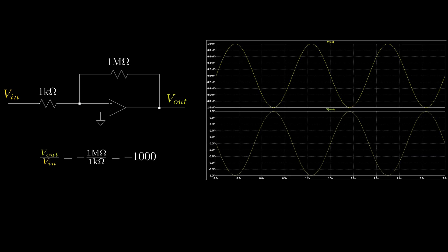Let's take a step back and look at a standard inverting amplifier. With the resistor values shown, the gain of the amplifier is minus 1000. For our 1 millivolt sinusoidal input, there is a 1 volt sinusoidal output.